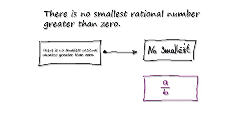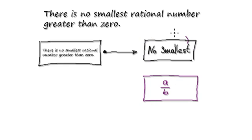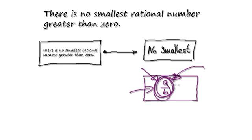So currently as things stand, either this is true or this is true — up here we're saying no smallest rational number. But with proof by contradiction, we are going to assume that there exists this special smallest possible rational number here. This number here exists — let's just assume that it exists.